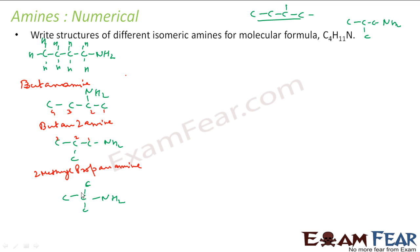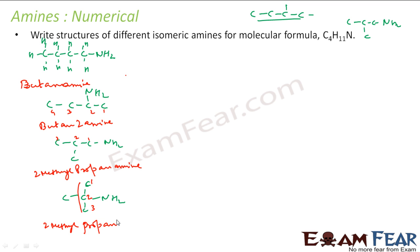Similarly, for the next structure, the longest chain is three carbons — please don't take the shorter chain as the longest chain. At carbon two I have a methyl group, so this is 2-methylpropan-2-amine. That completes naming all the primary amine structures.